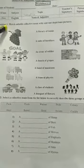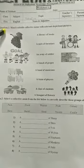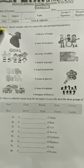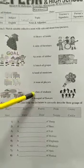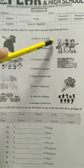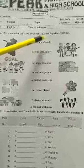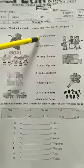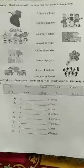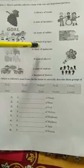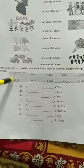As one group. Question number one is: match the suitable collective noun with the relevant depiction or picture. You will have to match the collective noun to the relevant picture — like 'a library of books' for a collection of books, you will match it to the correct picture.